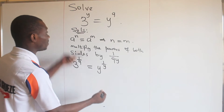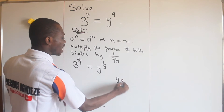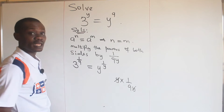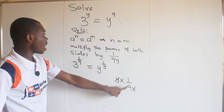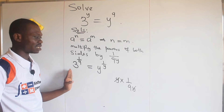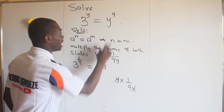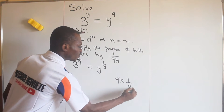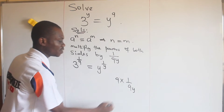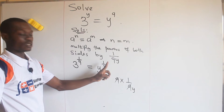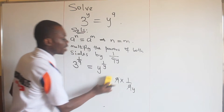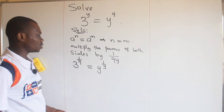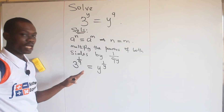Remember, if you multiply y by one over 9y, y will cancel y so you only get one over nine on this side. And if you multiply this nine by one over y, nine will cancel nine so you get one over y. Now let's see what else we can do.